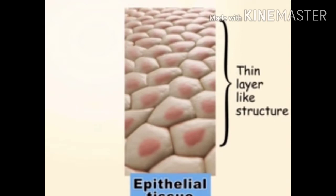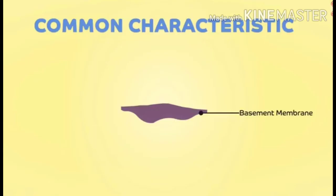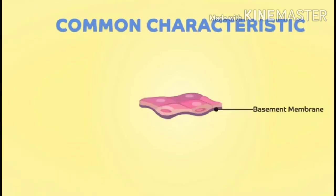In epithelial tissue, we have the basement membrane. The base refers to the basic body organ — which is also the largest sense organ — that is our skin. This is the basement membrane to which all functions of epithelial tissue are related. It is a fiber supportive membrane that helps to hold the cells together in a single straight line.